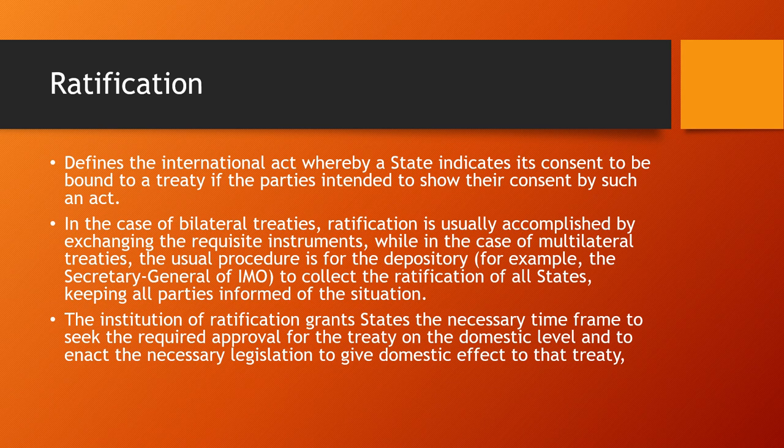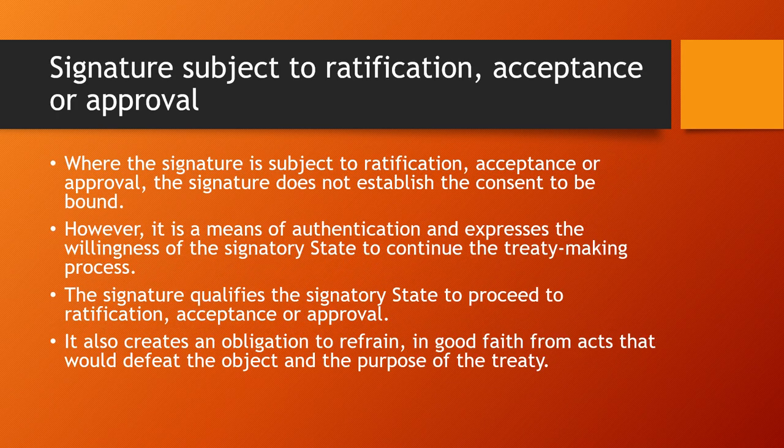In the case of bilateral treaties, ratification is usually accomplished by exchanging the requisite instruments. In the case of multilateral treaties, the usual procedure is for the depository — for example, the IMO Secretary General — to collect the ratifications of all states and keep all parties informed. The institution of ratification grants IMO member states the necessary time frame to seek required approval at the domestic level and to enact the necessary legislation to give domestic effect to that treaty.